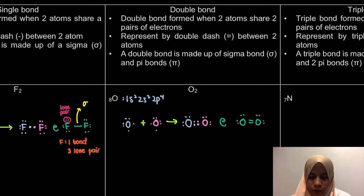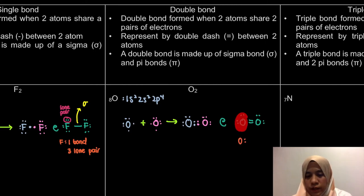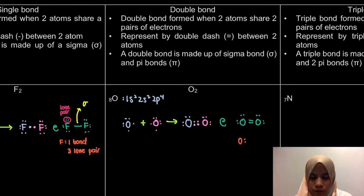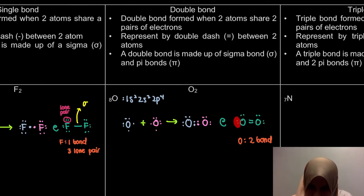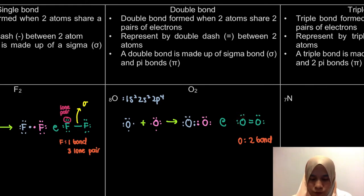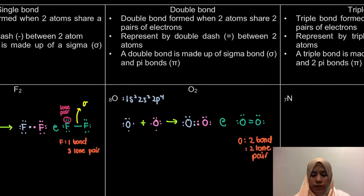For the oxygen molecule, each oxygen has two bonds — a double bond. And how many lone pairs does each oxygen have? Each pair of non-bonding electrons counts as one lone pair, so each oxygen has two lone pairs.